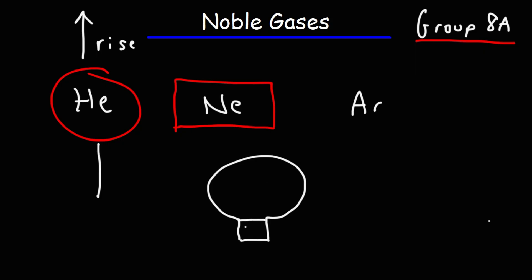Argon is also used in incandescent light bulbs. So here's an incandescent light bulb with a tungsten filament. To prevent the heated tungsten element from reacting with air, this bulb is typically filled with argon. Now krypton could do the same thing. It can provide a non-corrosive environment just like argon. And we've seen xenon, how it can react with fluorine.